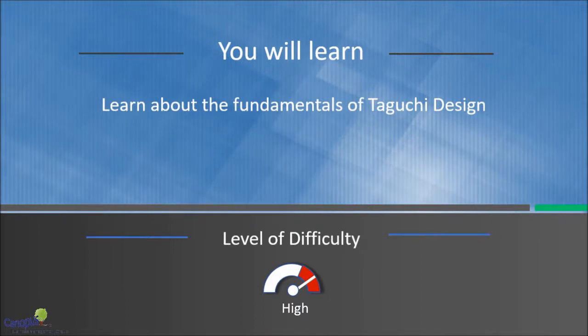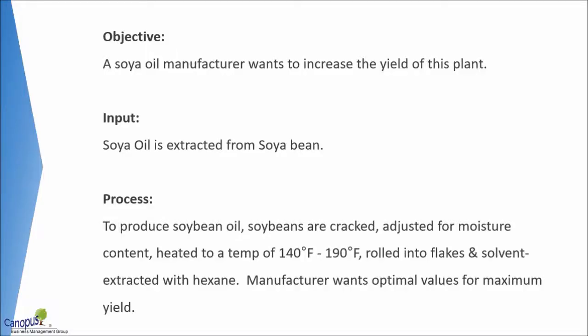Welcome back. We are going to now take an example and perform a static design Taguchi experiment. The example is something very similar to what we have been dealing with earlier, but I have changed the values a little bit. This is a soya production environment where we want to increase the yield — so higher the better. Soya oil extracted percentage is our output and we have a handful of controllable factors.